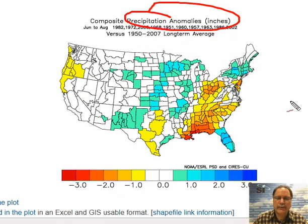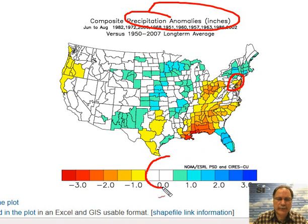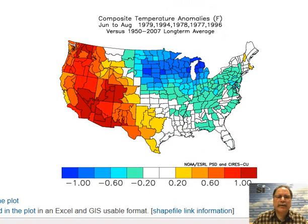Looking at the precipitation anomaly chart for those same analog years — La Niña early in the year followed by El Niño by summertime — the result is basically near normal precipitation in the I-95 corridor, with some straddling of near-normal amounts.